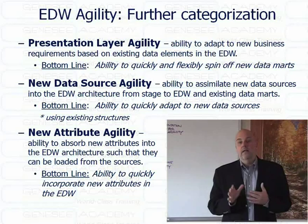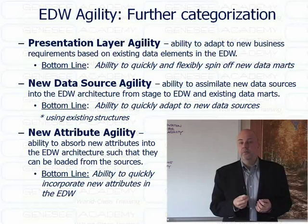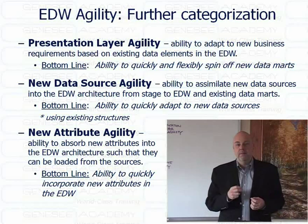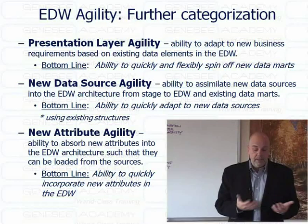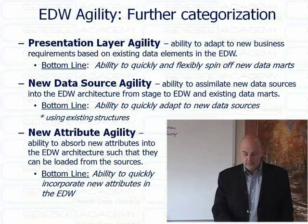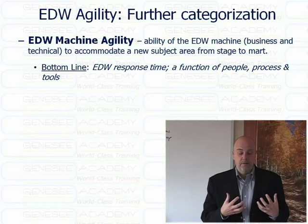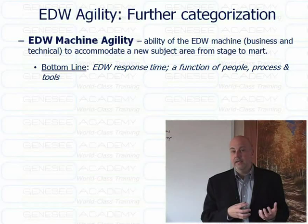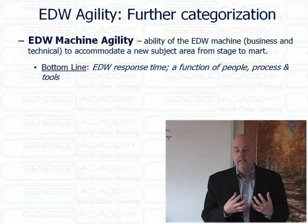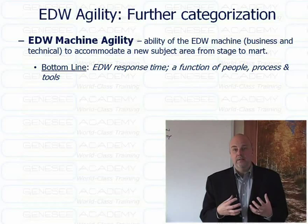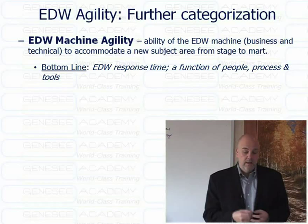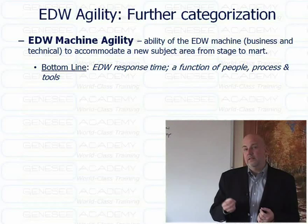The next categorization is new attribute agility — the ability to absorb new context-defining attributes into the EDW so that they can be loaded in from sources and utilized. The bottom line is the ability to quickly incorporate new attributes into the EDW structure. Last is EDW machine agility, the broader concept of the ability of the EDW itself — business and technical — to accommodate a new subject area from stage all the way to mart. Bottom line: EDW response time is a function of people, process, and tools for the whole warehouse machine.